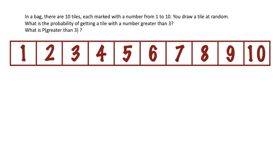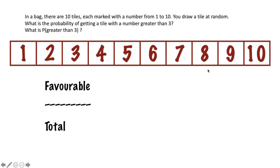It could be a little more complicated if I'm dealing with an event, which means there's more than one outcome that can help me win. For example, what's the probability of getting a tile with a number greater than three? There's a whole bunch of numbers greater than three — I wouldn't include three itself. If I get a four, five, six, seven, eight, nine, or ten, those are favorable outcomes. There are seven of those, so my favorable outcomes is seven over ten.